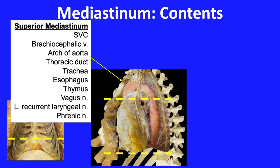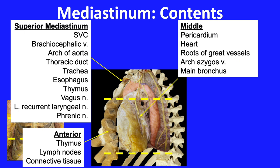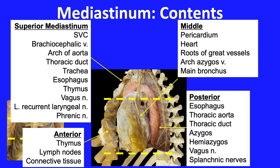We will look next at the inferior mediastinum. As you can imagine, the number of structures found there is even greater than in the superior mediastinum. Consequently, anatomists have further subdivided the inferior mediastinum into an anterior, middle, and posterior mediastinum. When we focus our attention on the heart, we will look more closely at the middle mediastinum.